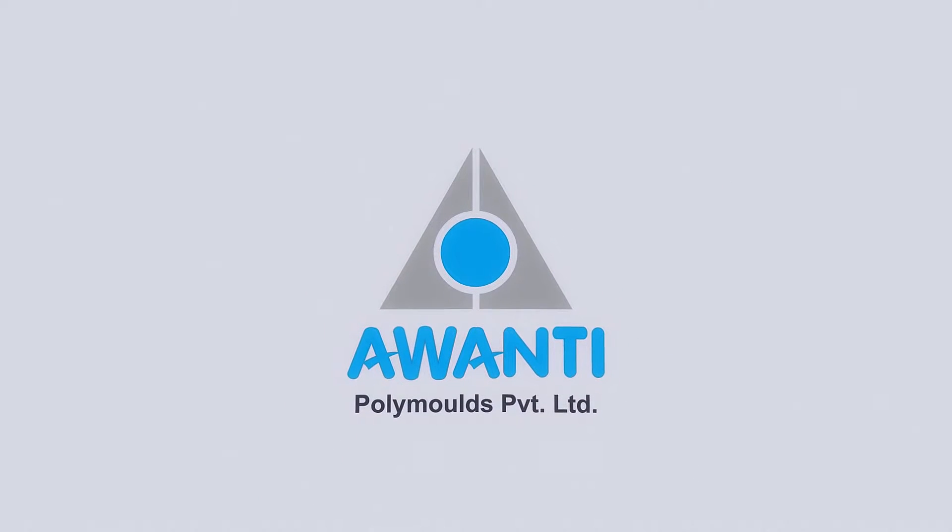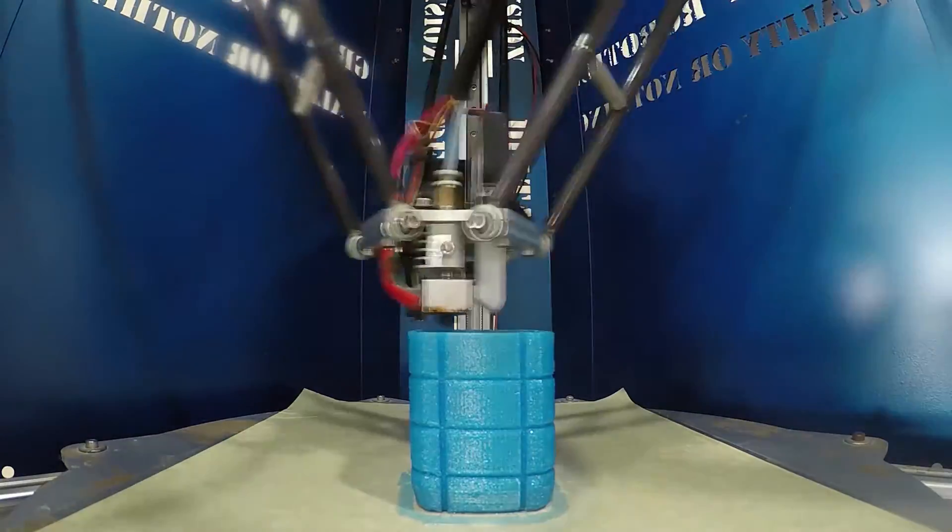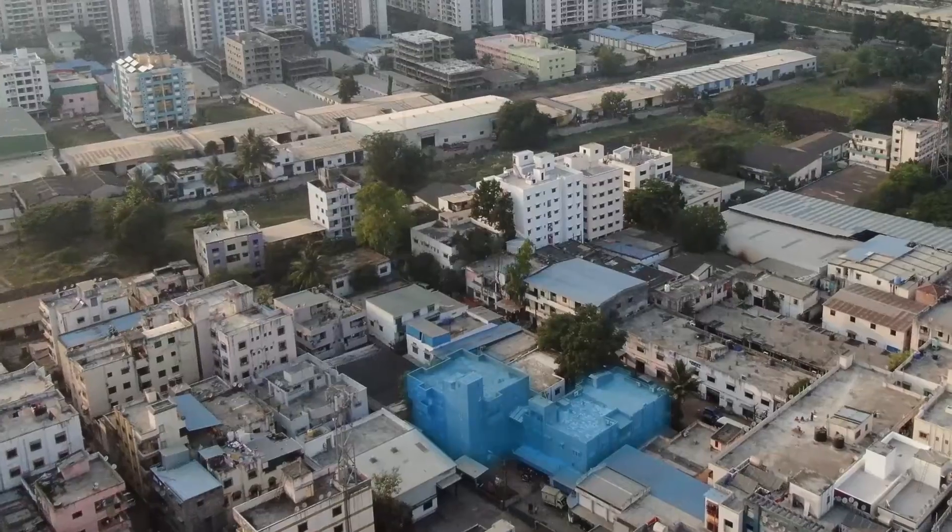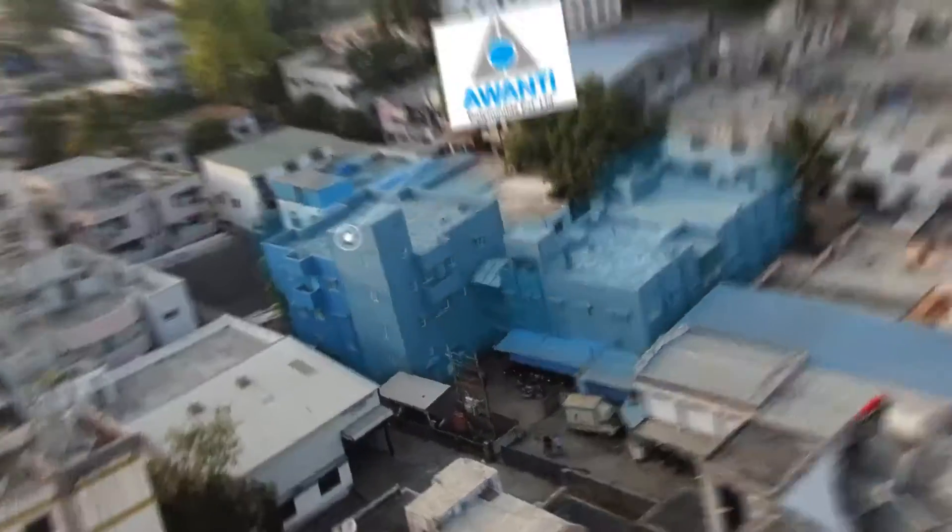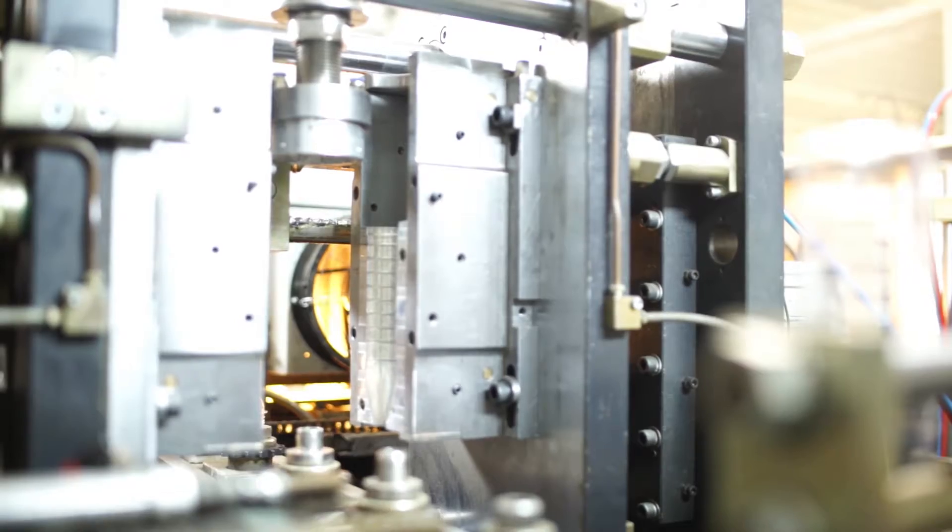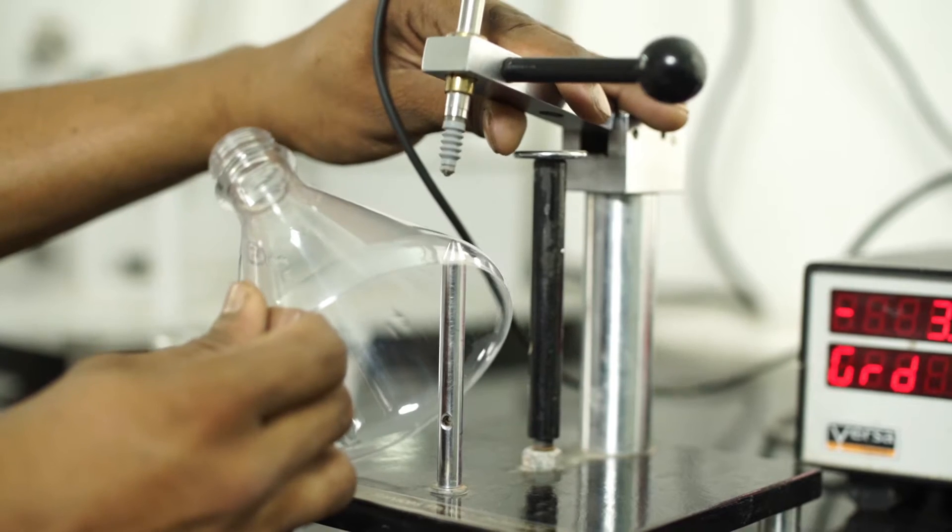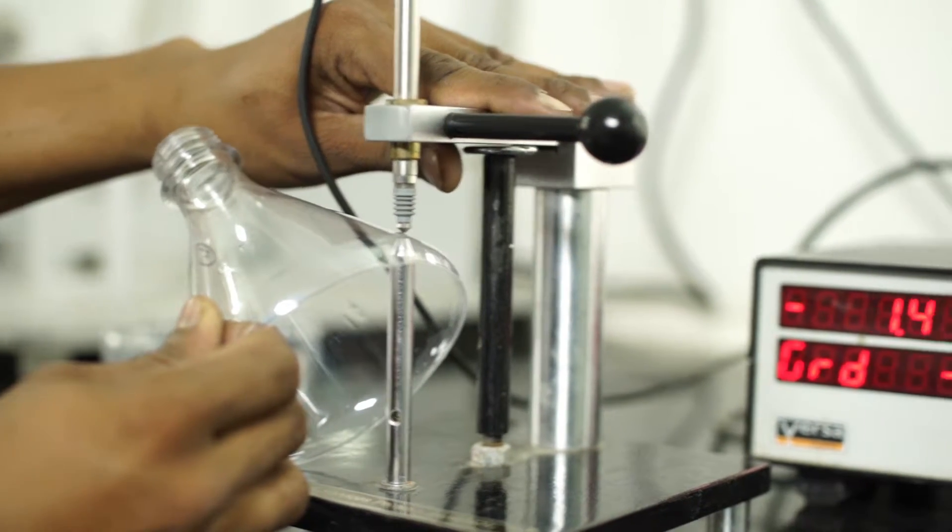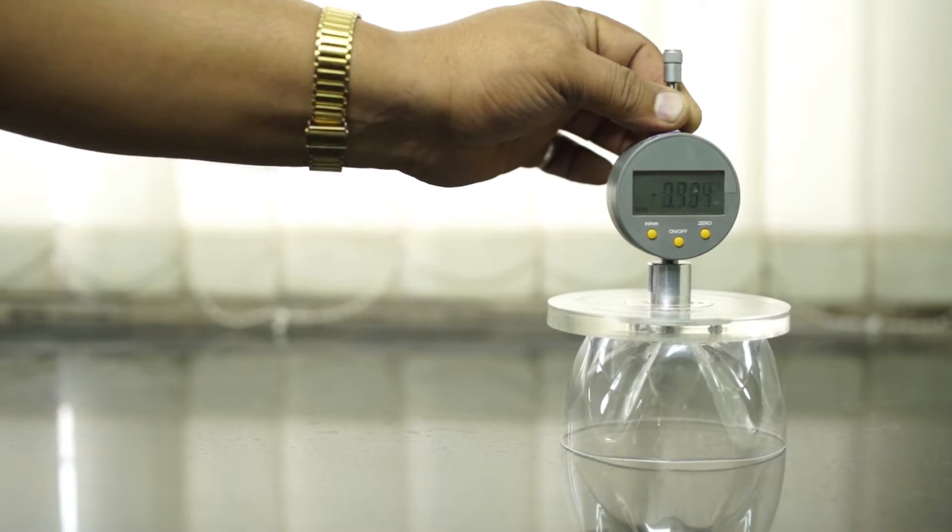Our comprehensive facilities include a design department, a sprawling manufacturing division spread over 10,000 square feet. Our testing division has a world-class blowing machine to conduct pilot mold trials. Additionally, our QA lab is equipped to conduct over 15 internationally standardized quality checks on blown bottles.